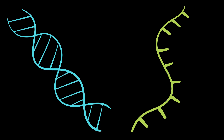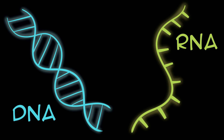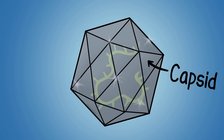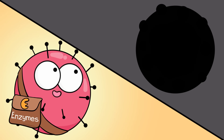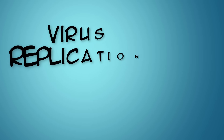One thing all viruses have in common is that they have some type of genetic material. This genetic material can be in the form of DNA or RNA. Viruses usually have some kind of protein coat, also known as a capsid. The capsid can protect the DNA or RNA genetic material. Viruses can also have other structures — some viruses package special enzymes with them, and some viruses have an outer envelope. These additions can be useful to the virus in virus replication.